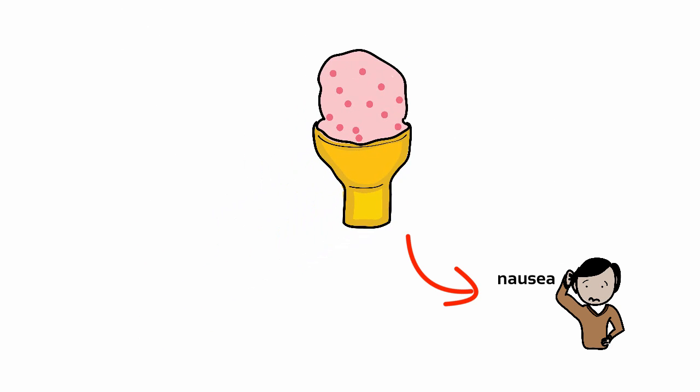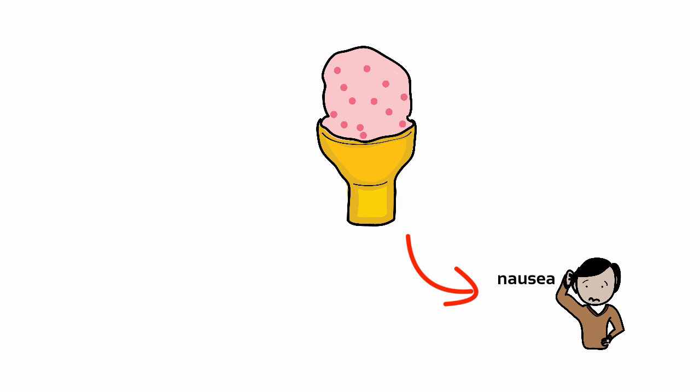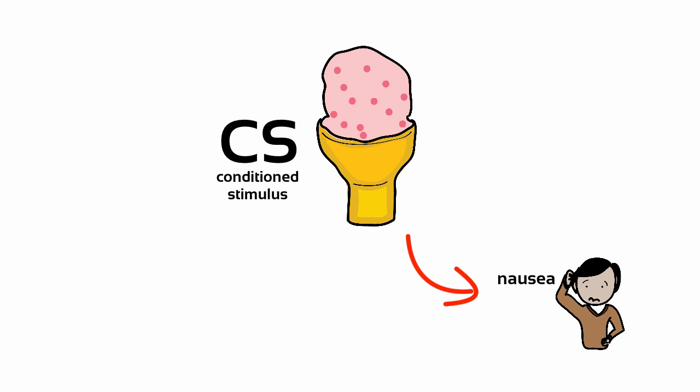the person is classically conditioned to now feel sick whenever eating a strawberry ice cream cone. The ice cream cone is now the conditioned stimulus, and the nausea at eating the ice cream cone is a conditioned response.